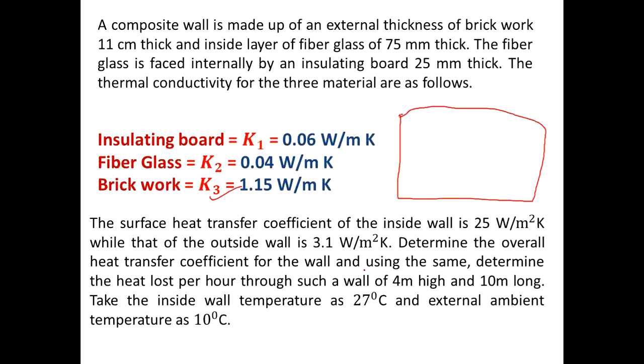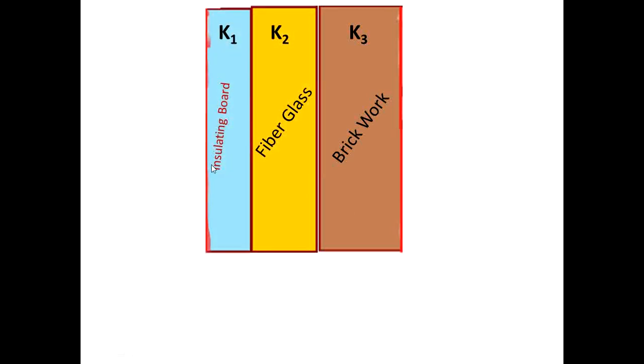When the height is 8 meter and width is 4 meter, you calculate 8 into 4, it is 32 meter square. For this 32 meter square, you multiply with 3600 to convert to kilojoules per hour. This is the external brickwork, fiberglass faced inside, insulating board.